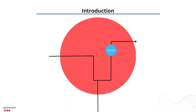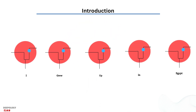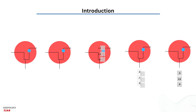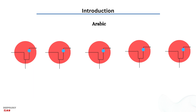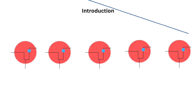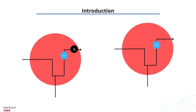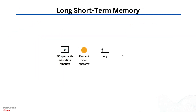But there are also cases where we need more context. Consider trying to predict the last word in 'I grew up in Egypt, I speak fluent Arabic.' Recent information suggests the next word is probably the name of a language, but if we want to narrow down which language, we need the context of 'Egypt' from further back. It is entirely possible for the gap between the relevant information and the point where it is needed to become very large, and as that gap grows, vanilla recurrent networks become unable to learn to connect the information.